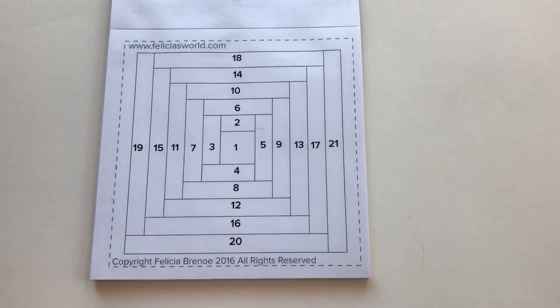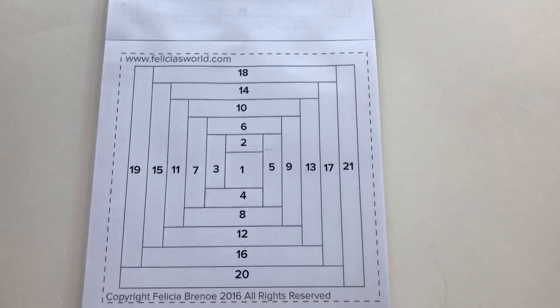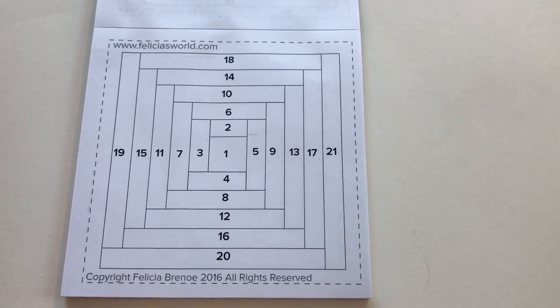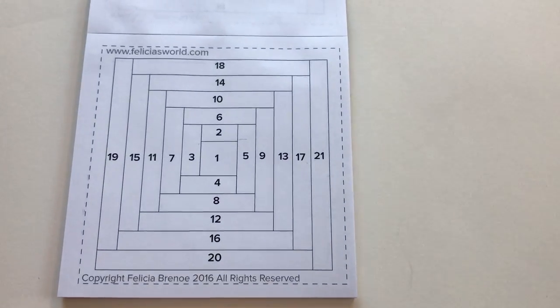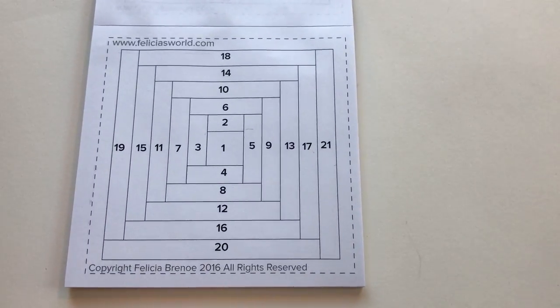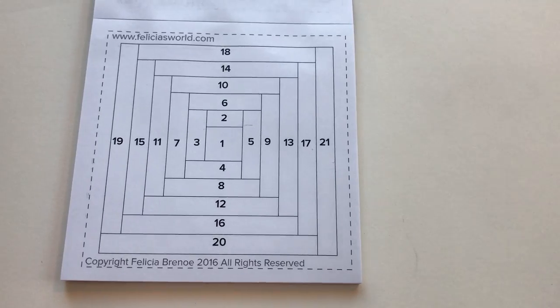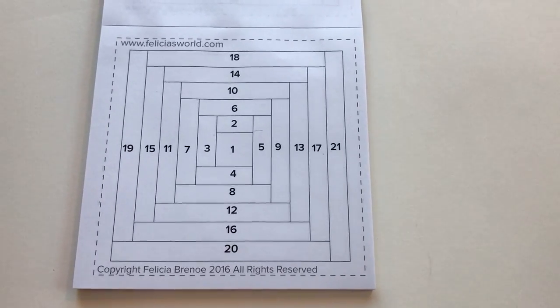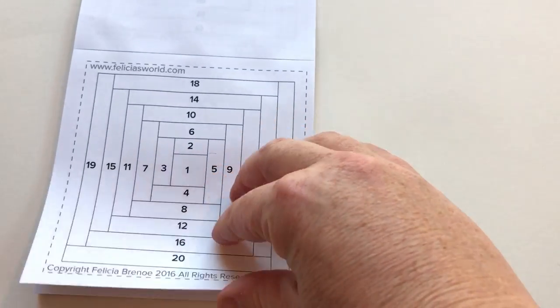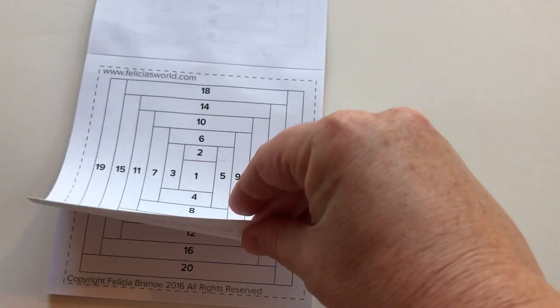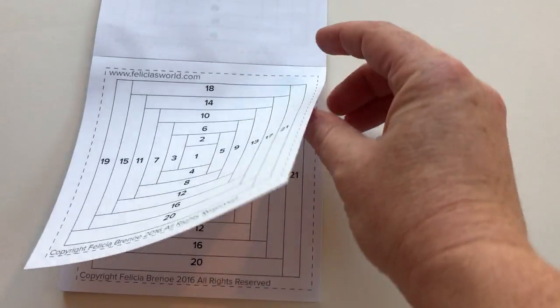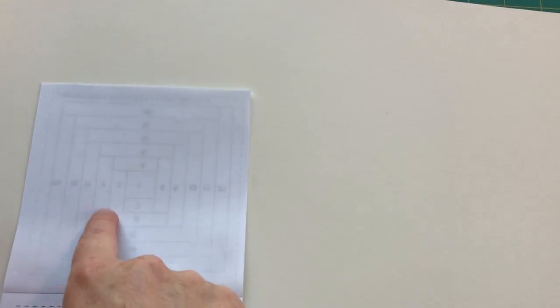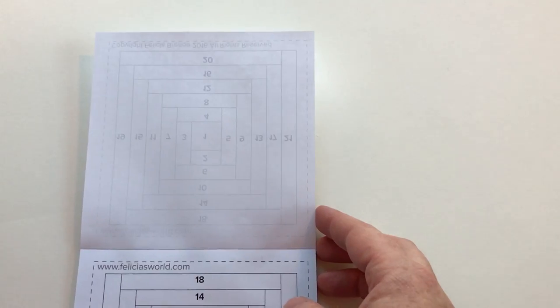So if you're brand new to paper piecing, one thing that we should probably clarify is that this side that you're looking at here, this is what goes up on the sewing machine. This is what you're looking at when you're sewing. And then your fabric actually ends up on the underside of the paper. So that your block, as you're sewing on this top side, your block is actually forming on the backside here with actual fabric.